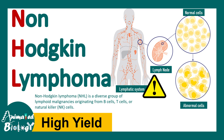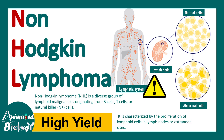It includes B cell, T cell, and natural killer cell — predominantly B cell, but sometimes T cells and rarely natural killer cells. It is characterized by proliferation of lymphoid cells in the lymph nodes and in the extranodal sites. It involves B cells, and the lymph node is the site of the problem, so lymph node enlargement is a common theme in all kinds of lymphomas.